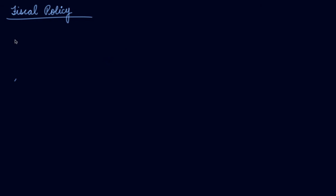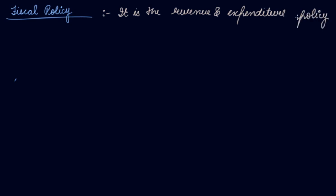In this video we will be studying about fiscal policy and some general suggestions to control inflation. Fiscal policy is the revenue and expenditure policy of the government — any policy related to revenue, incomes, or expenditure. The first policy is check on public expenditure.